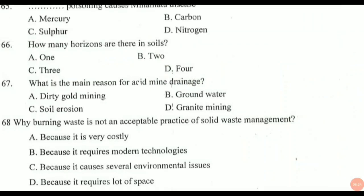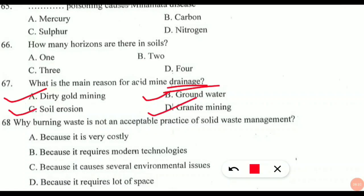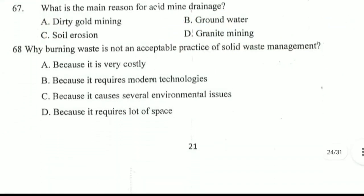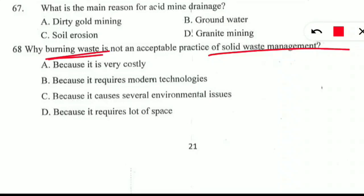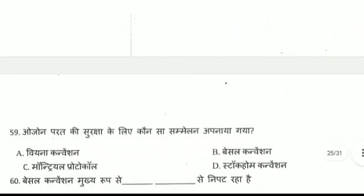Question 67: what is the main reason for acid mine drainage — dirty gold mining, groundwater, granite mining, or soil erosion? This question is for you — comment in the comment section with the correct option. Question 68: why is burning waste not an acceptable practice of solid waste management? Because it causes several environmental issues, starting with air pollution. Ash and residue also fall into water bodies causing water pollution, and soil pollution as well. It is not acceptable because it causes environmental and health issues and affects animals too.